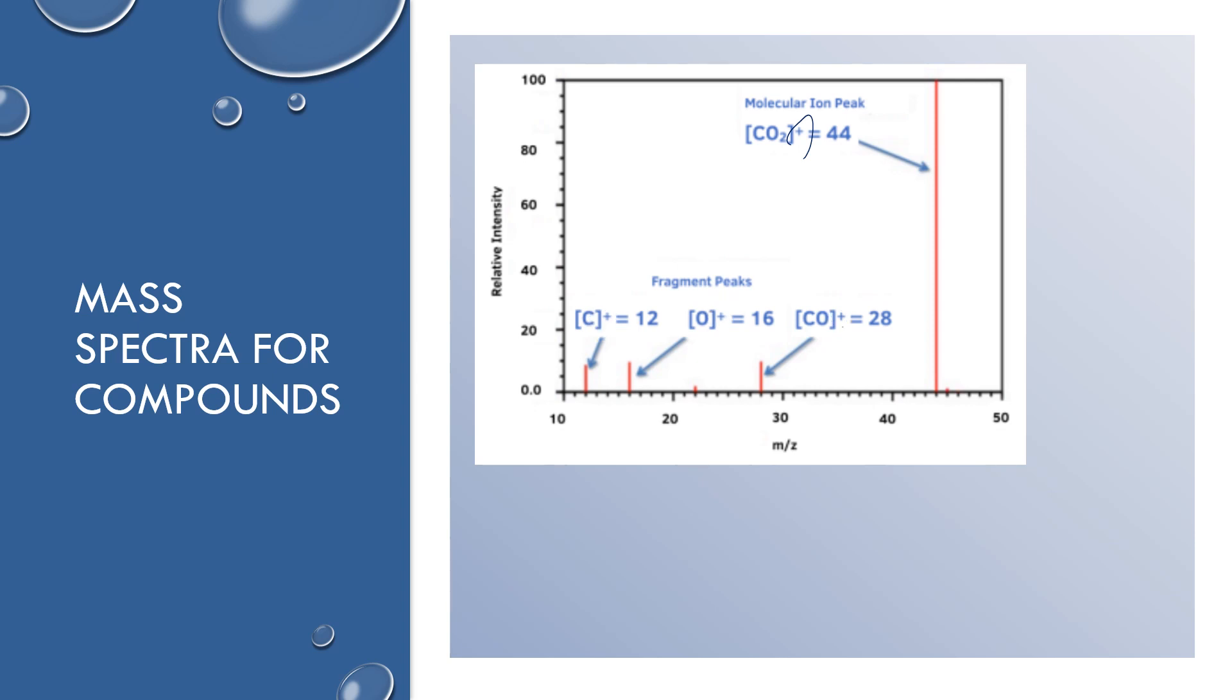I want you to think, so this is CO2. Its total mass is 44. Whichever peak is the largest tall peak, that's your total mass for the compound. Then you would consider if you break bonds. So if I break this first bond, I would wind up with an oxygen by itself and a C double bond O. The C double bond O would have a mass of 28, which is here, and the oxygen has a mass of 16.